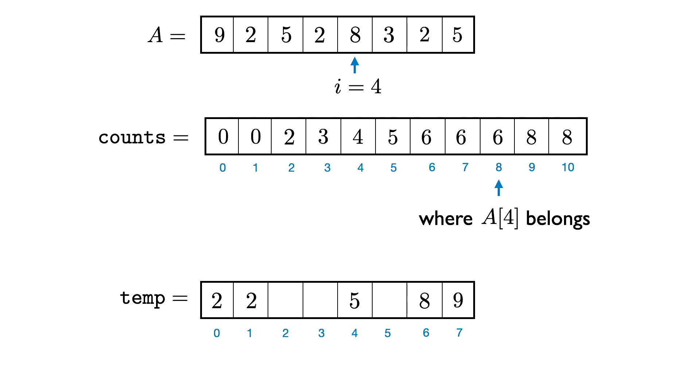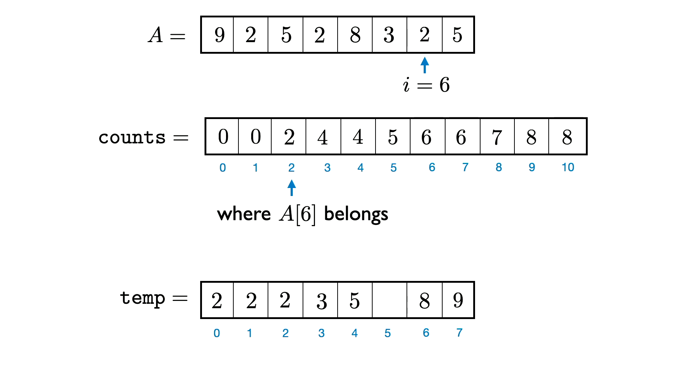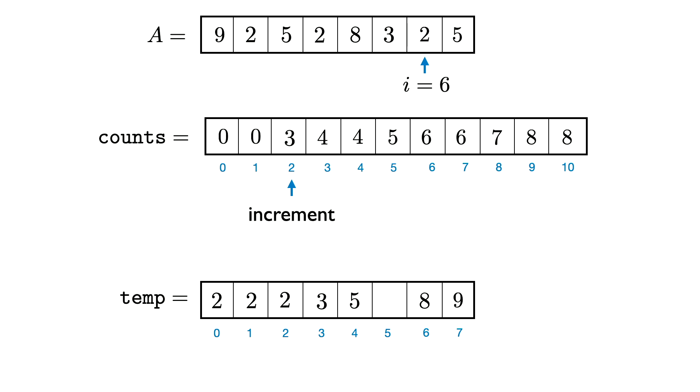When i is 4, A[4] is 8. We look at counts[8], which is 6, write 8 to the 6th entry of temp, and increment counts[8]. Next, A[5] is 3. We look at counts[3], which is 3, write 3 to the 3rd entry of temp, and increment. Then we come across another 2 — counts[2] says 2, so we write 2 to position 2 of temp and increment. Finally, the last element of A is 5. We look at counts[5], which is 5, write 5 to the 5th entry of temp, increment, and now the algorithm is finished.